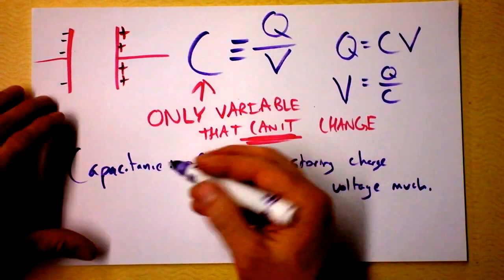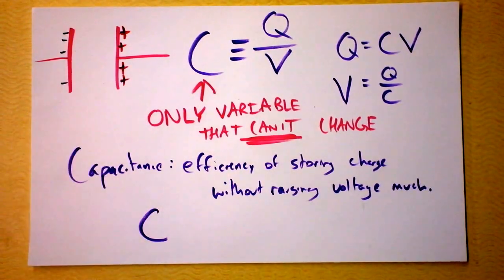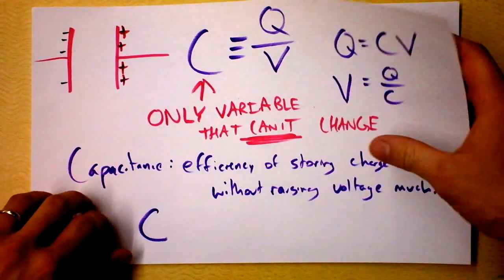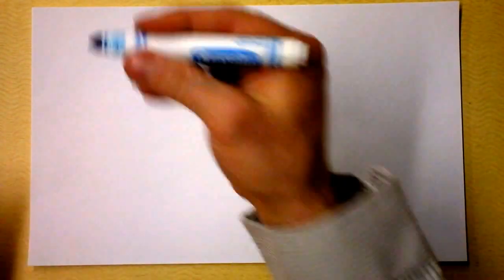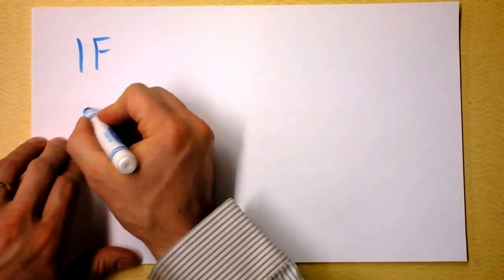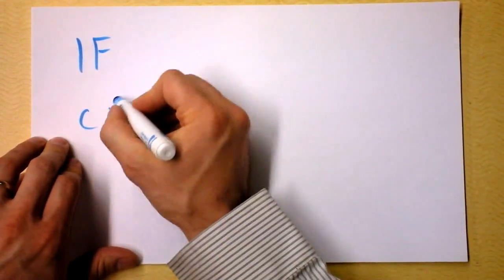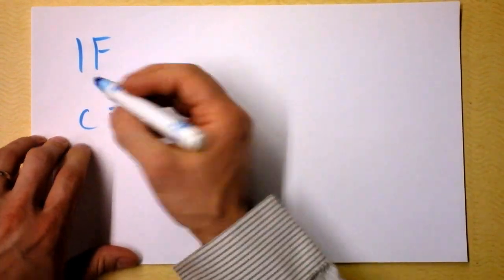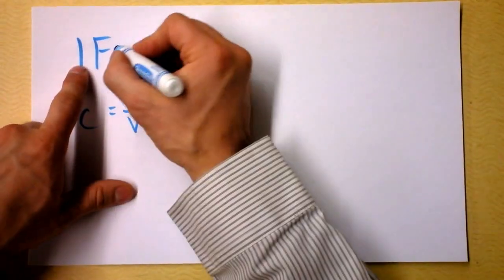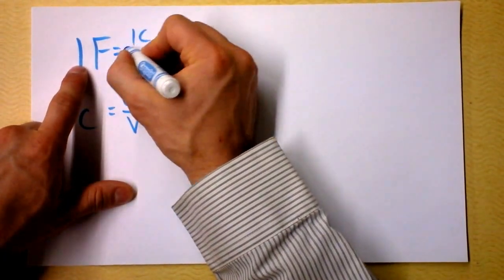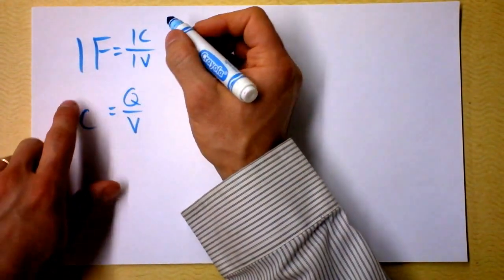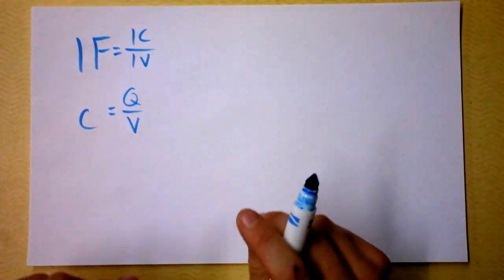This reminds me a lot of another efficiency that is represented by the letter C. Find out what it is, put it in the comments. Let's go on with this definition. I'll define a farad next. One farad is capacitance, and it's the unit over here on this side. And then you said Q over V, that's the unit of capacitance is a farad. So one farad has to be one coulomb divided by one volt. It's a coulomb per volt.